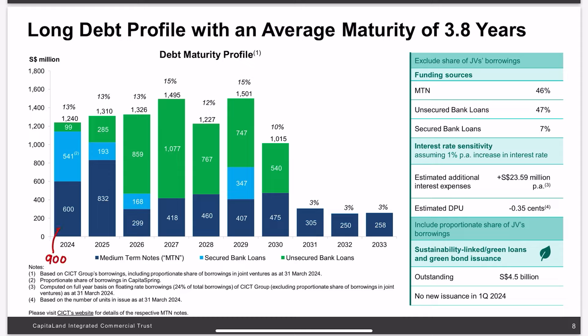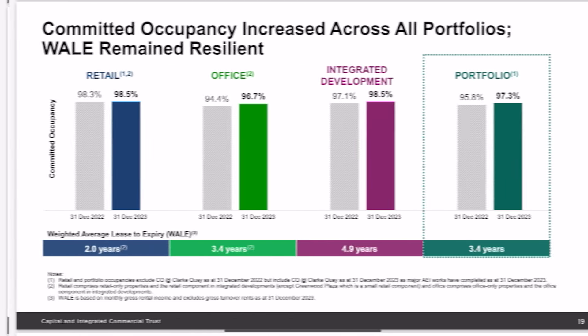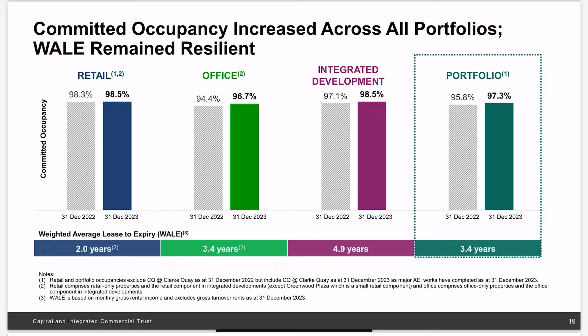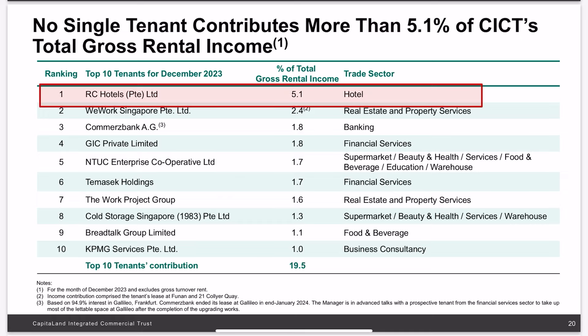If their properties continue to do well with profits increasing faster than the rise in finance costs, dividends are expected to continue going up. Overall occupancy is at 97.3 percent, which is high for retail and office properties. Interestingly, the retail leases have an average lease term of two years, which may benefit CICT as rental reversions come in higher upon renewal given Singapore's strong retail market. CICT has a well-spread tenant base, with RC Hotels at only 5.1 percent of total group income, meaning the collapse of any major tenant would not have a huge impact.